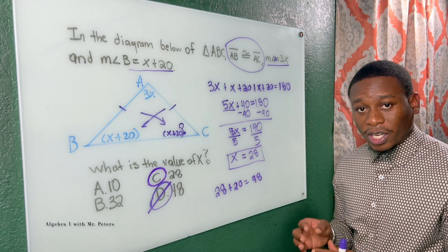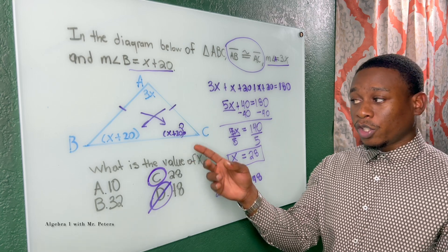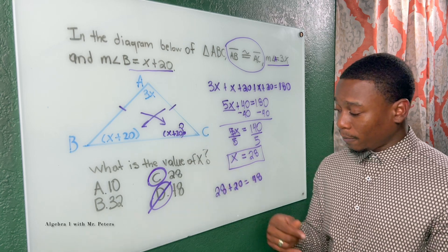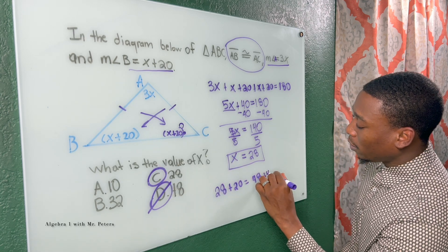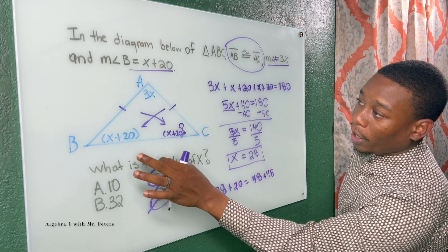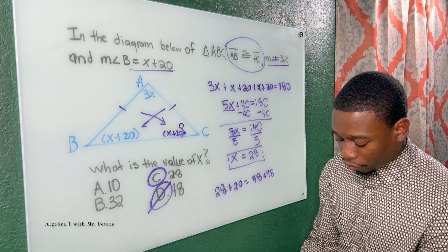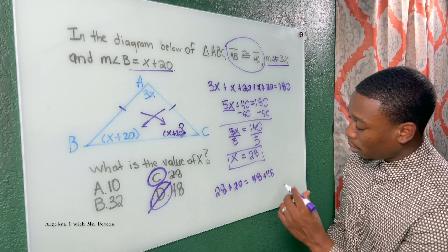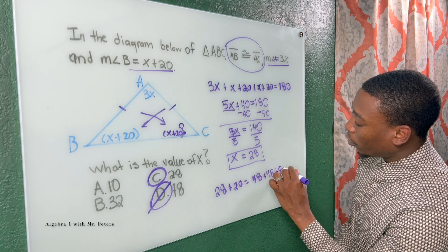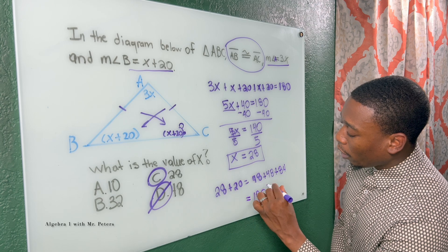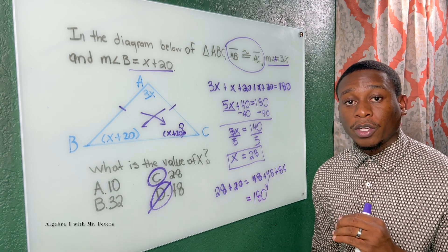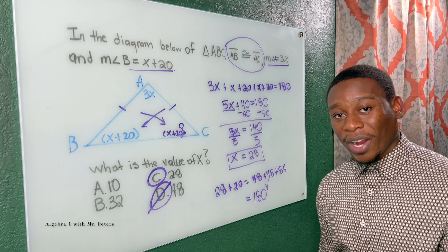And if we want to double check that this is correct, we could just plug it back in. We know we have 48 for this angle C plus 48 for angle B. And then when I do 3 times 28, this is going to give me 84. And when I add all these sides up together, it will equal to 180 degrees. So I know my answer is correct.